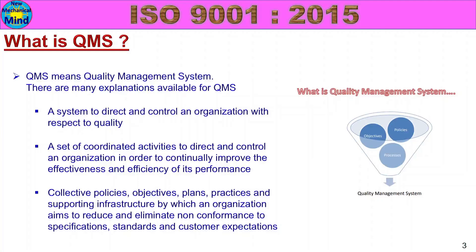It is a collective set of policies, objectives, plans, practices and supporting infrastructure by which an organization aims to reduce and eliminate non-conformances to specifications, standards and customer expectations. One company has procedures, objectives, policies, plans, practices and infrastructure to follow specific standards and customer expectations. A quality management system helps avoid non-conformities.